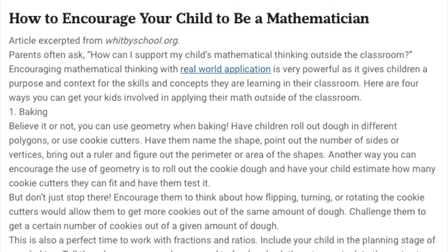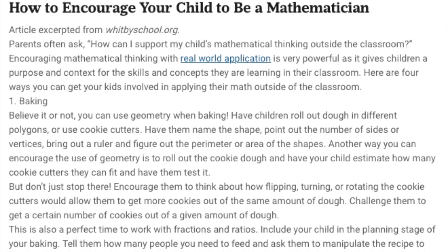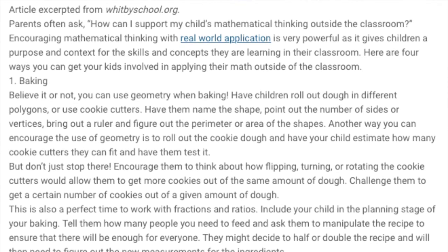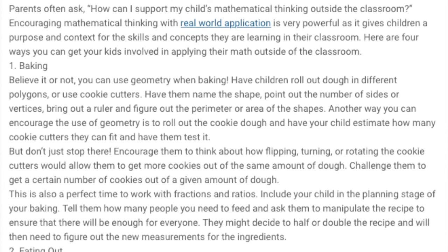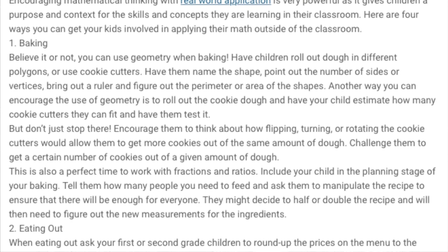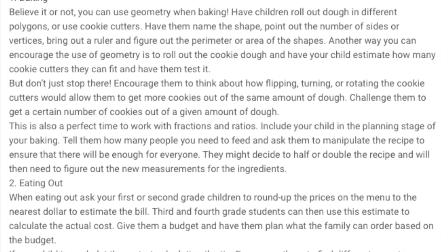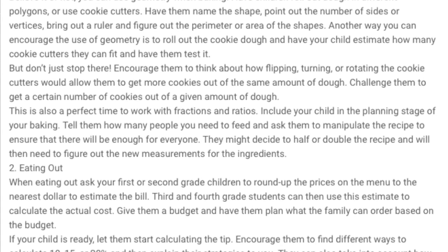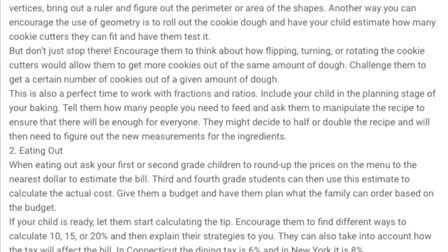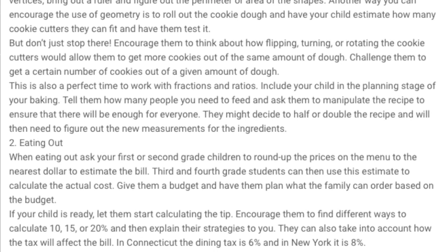This week's featured article is entitled How to Encourage Your Child to Become a Mathematician. It offers ways to help immerse your child in the real-world aspects of math. For example, by baking — there are geometry skills and measurement skills used with baking, such as ounces and pounds. Also, when eating out, ask your first or second grade children or older to estimate the bill by rounding the cost of each item ordered. If your child is ready, let them start calculating the actual percent to be paid for the tip.